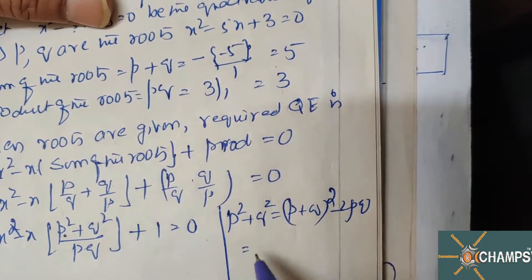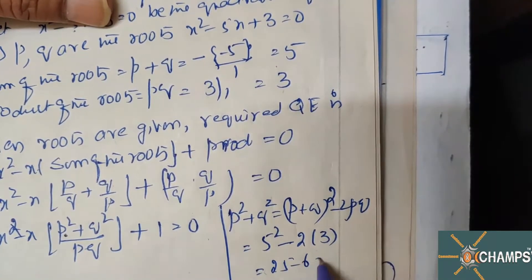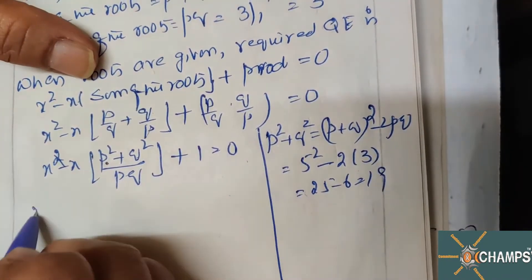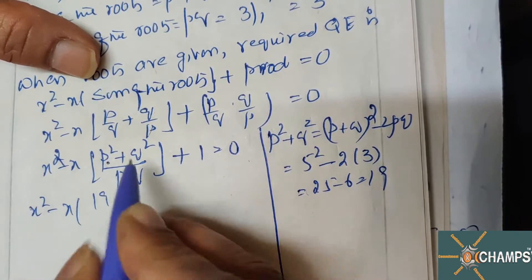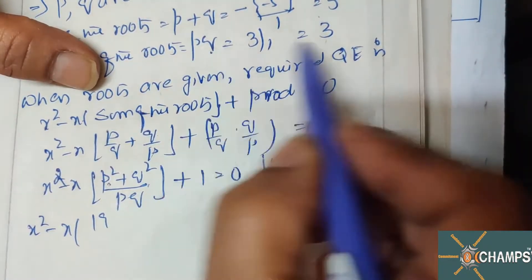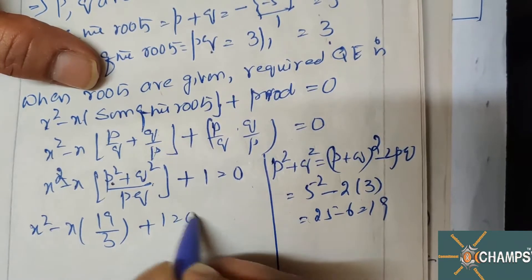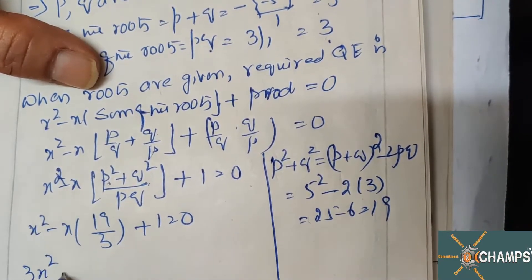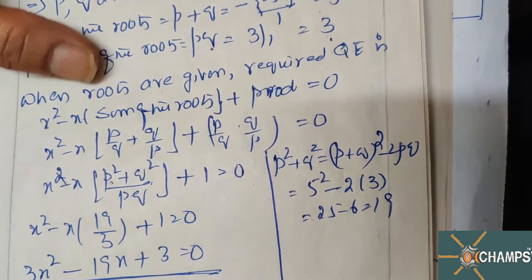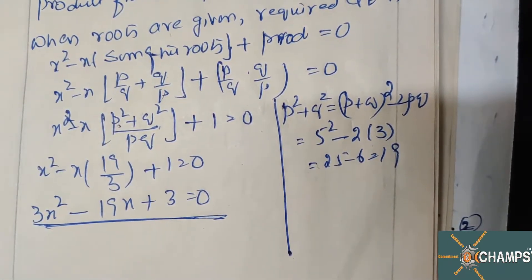p² + q² = (p + q)² - 2pq = 5² - 2(3) = 25 - 6 = 19. So the equation becomes x² - x·(19/3) + 1 = 0. Replacing p² + q² with 19 and pq with 3, then dividing by 3 and multiplying through by 3 gives the required quadratic equation. This is option A.